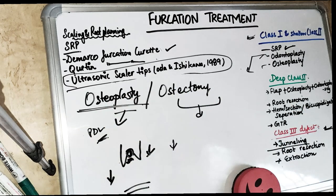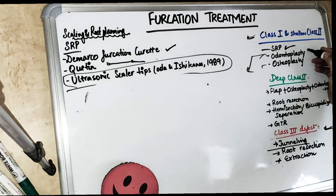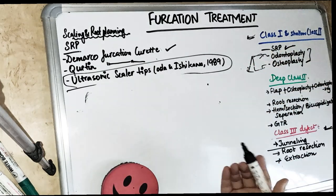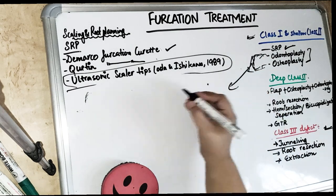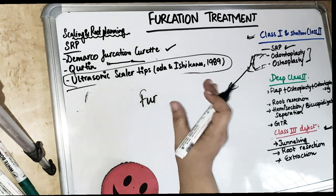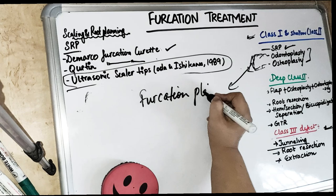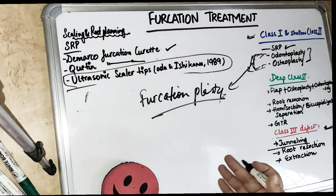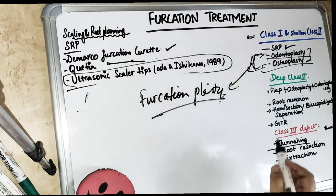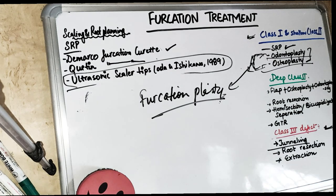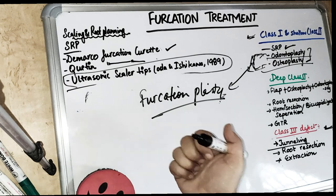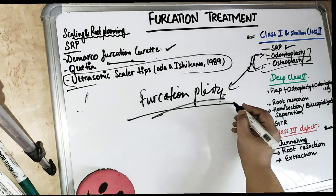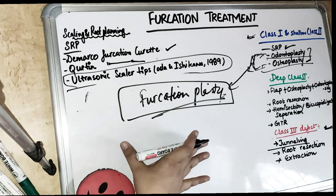Furcation plasty is basically the combination of both odontoplasty and osteoplasty — removing the bone and reshaping the tooth structure near the furcation area. First you elevate the flap, do curettage removing all granulation tissue, then do odontoplasty and osteoplasty. After cleaning and debridement, the flap is repositioned — either apically displaced or undisplaced. Most of the time for furcation we do the apically displaced flap.